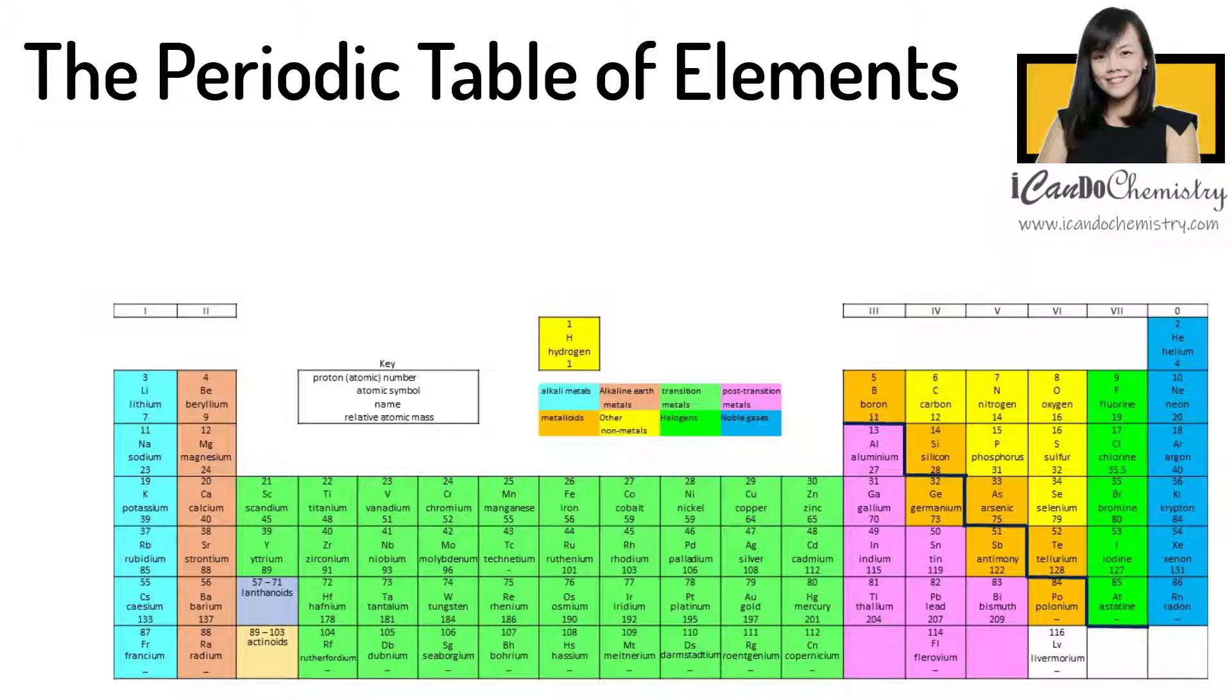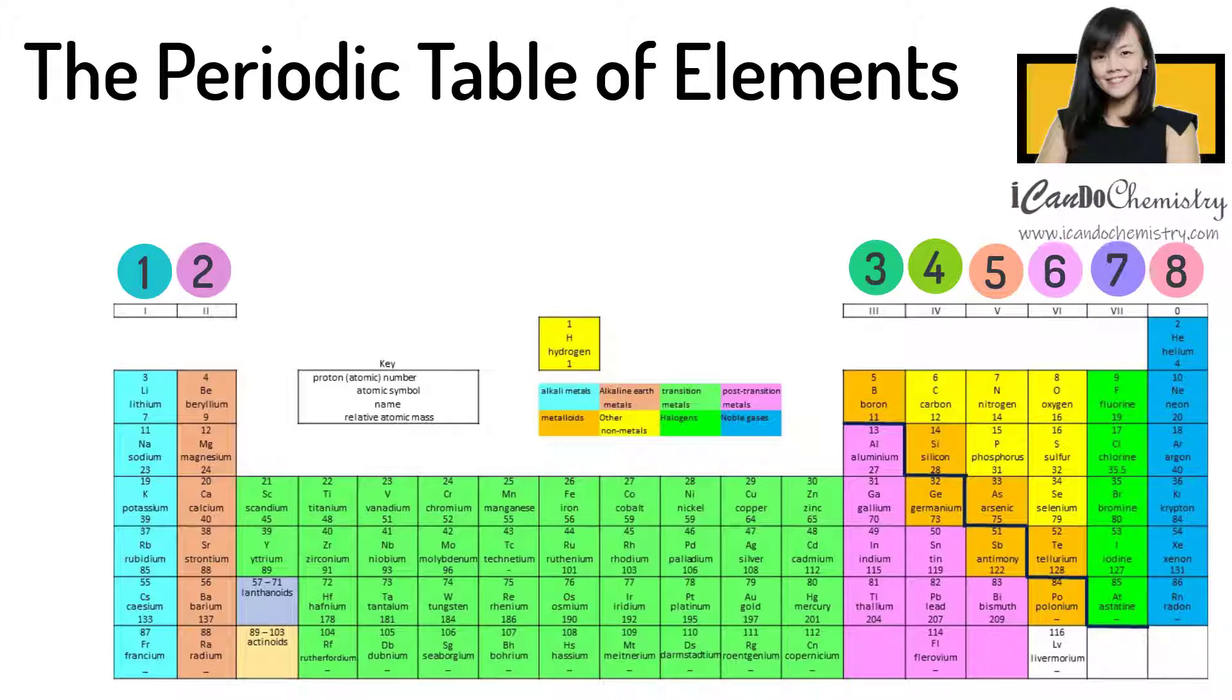Now a group is a vertical column of elements. This periodic table consists of 8 groups of elements numbered from 1 to 7 and 0. Group 0 is sometimes called group 8.